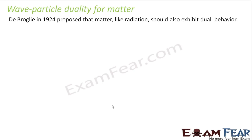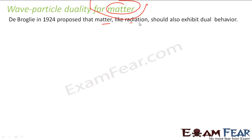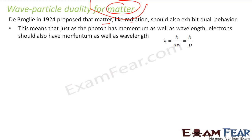So we have studied the dual nature of matter. In 1925, De Broglie proposed that matter, like radiations, also exhibits dual behavior. That means, just as the photon has momentum as well as wavelength, the electron also has momentum as well as wavelength.